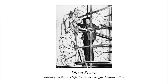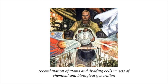Rockefeller wanted the painting to make people pause and think. Rivera was paid $21,000 for the work. The central composition was intended to contrast capitalism and socialism, an idea that was approved by Rockefeller. Rivera's composition depicted many aspects of contemporary social and scientific culture.